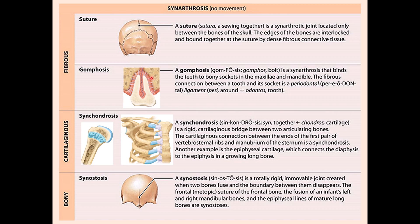The second type of synarthrosis is cartilaginous, called synchondrosis, meaning they are made of cartilage but are not mobile. One example is the epiphyseal growth plate, located between the epiphysis and diaphysis of a long bone — the area where bones grow. Another example is the cartilage between the first rib and the manubrium of the sternum, which is also immobile.